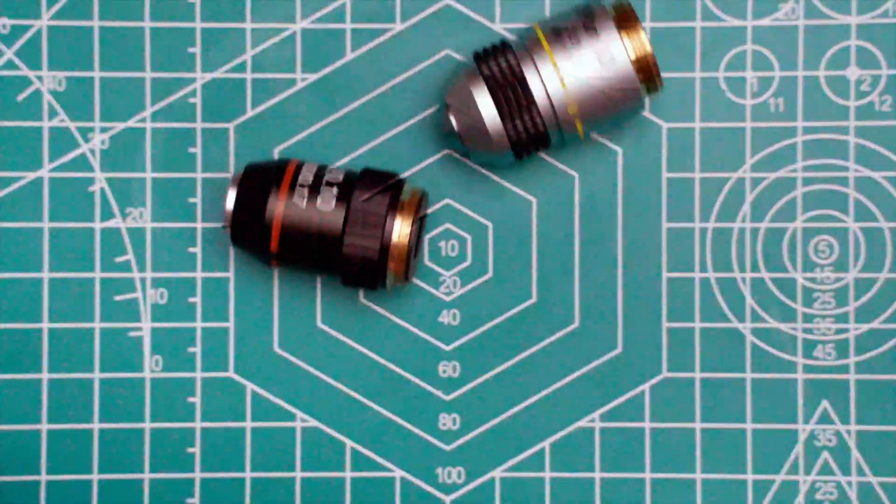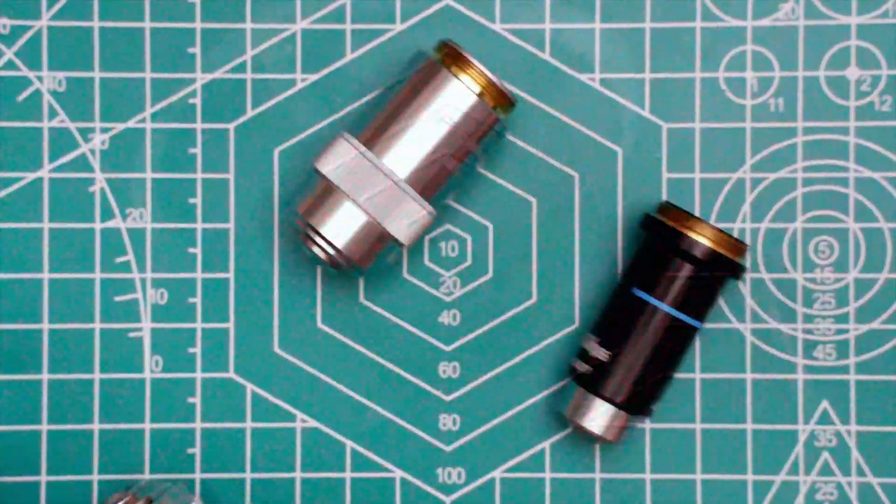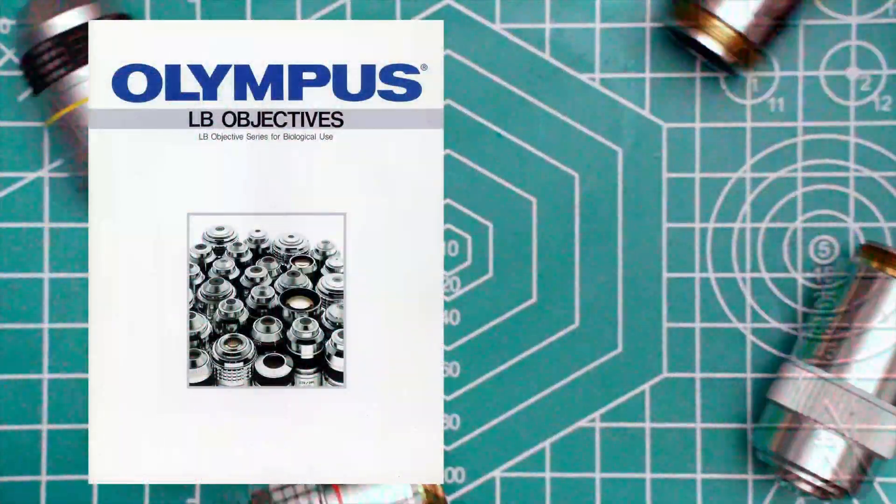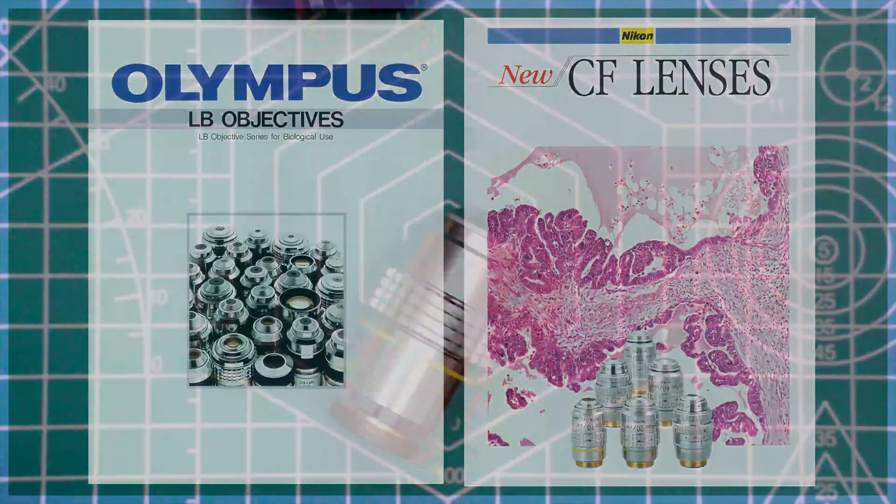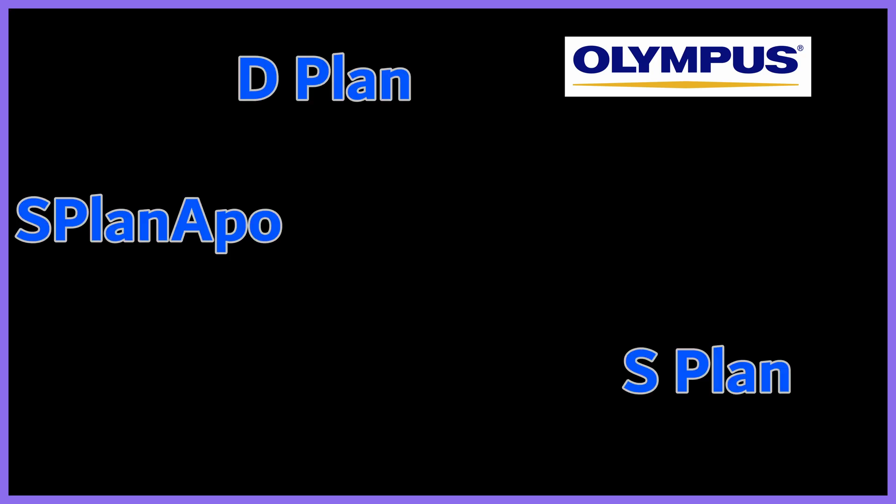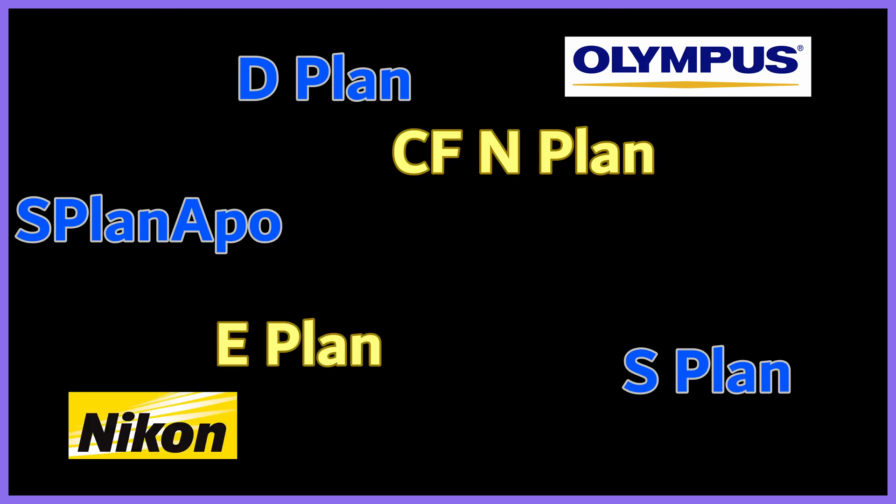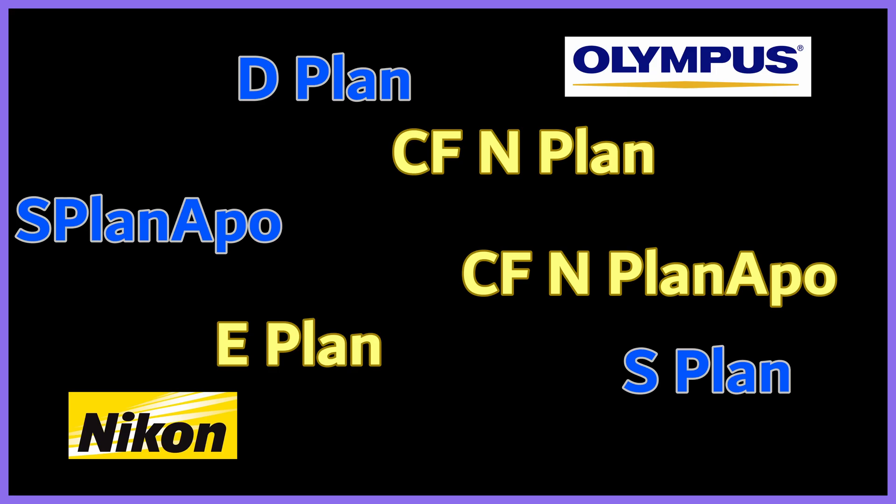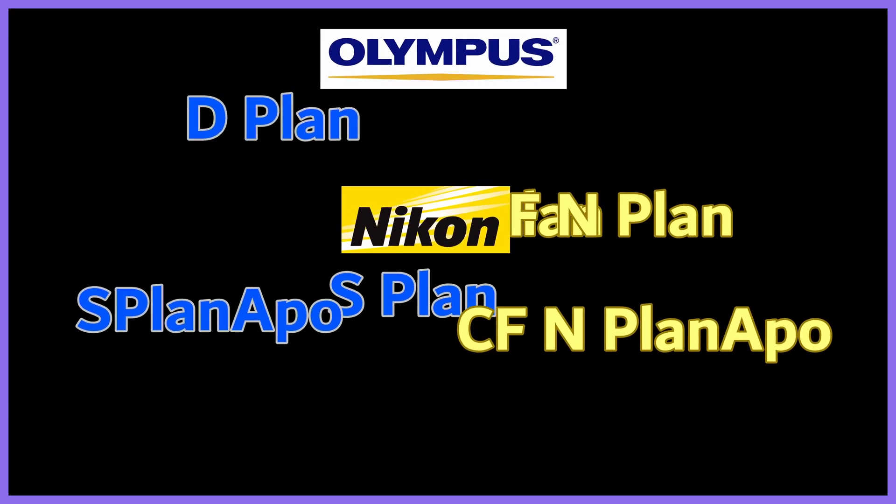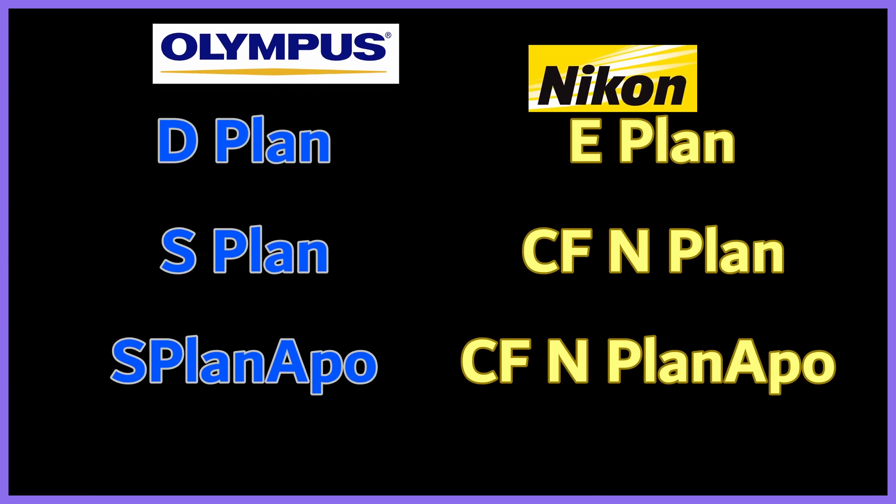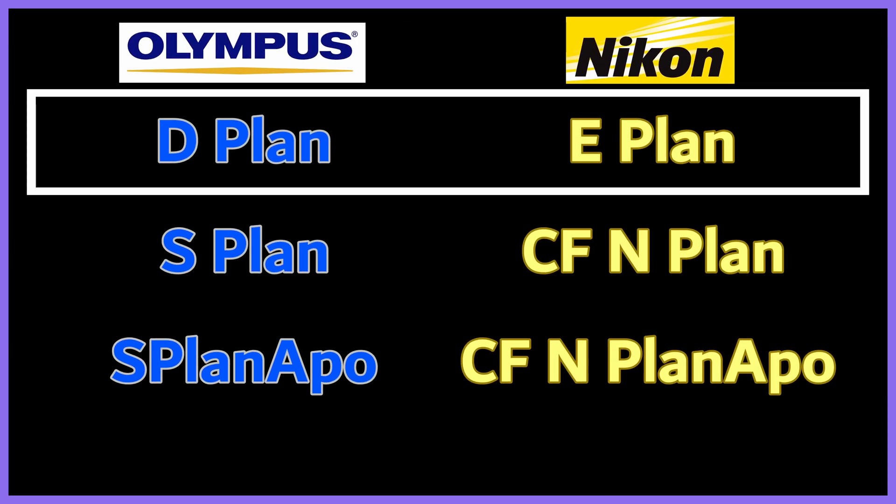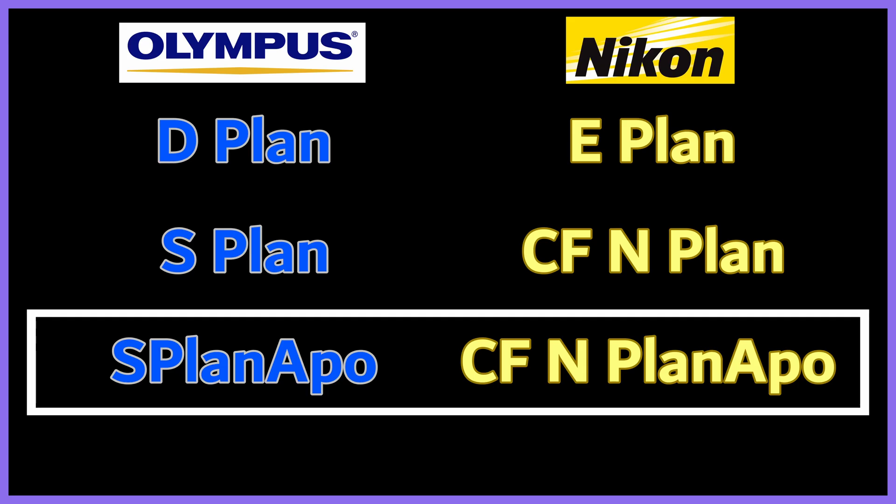So for today, I'm going to limit you to a small set of objectives from two different manufacturers: Olympus and Nikon. The objectives I recommend for you are Olympus's D-Plan, S-Plan, or S-Plan Apo Brightfield objectives, or Nikon's E-Plan, CFN-Plan, or CFN-Plan Apo Brightfield objectives. These are roughly organized into similar product classes, which I refer to as low-end plans, high-end plans, and high-end plan apochromats.